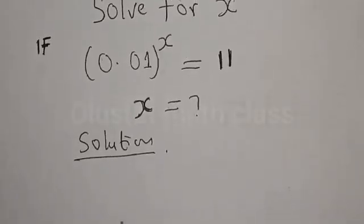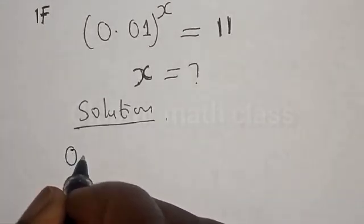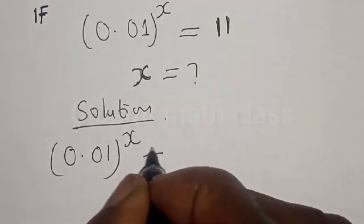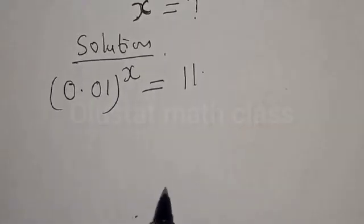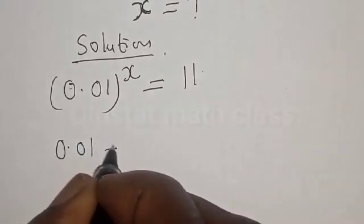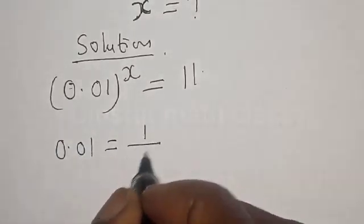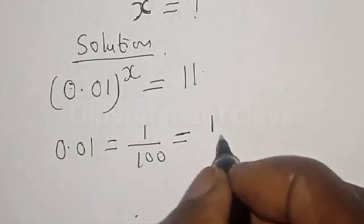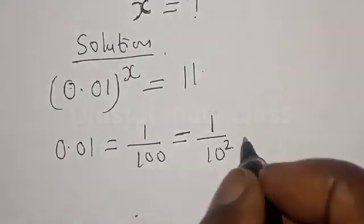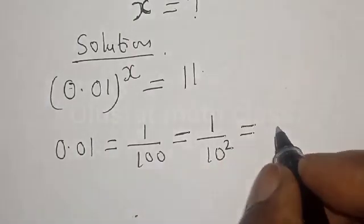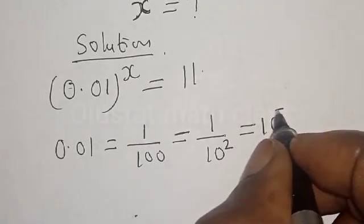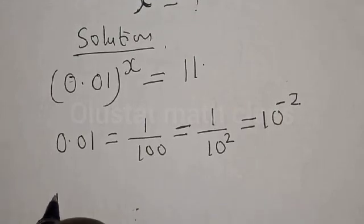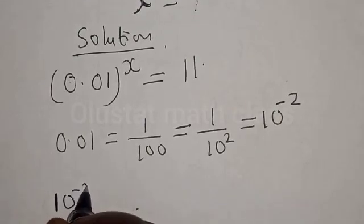Solution. We have the given equation: 0.01 raised to the power of s is equal to 11. Remember, 0.01 is simply 1 over 100, which is equal to 1 divided by 10 squared, which is equal to 10 raised to the power of minus 2.